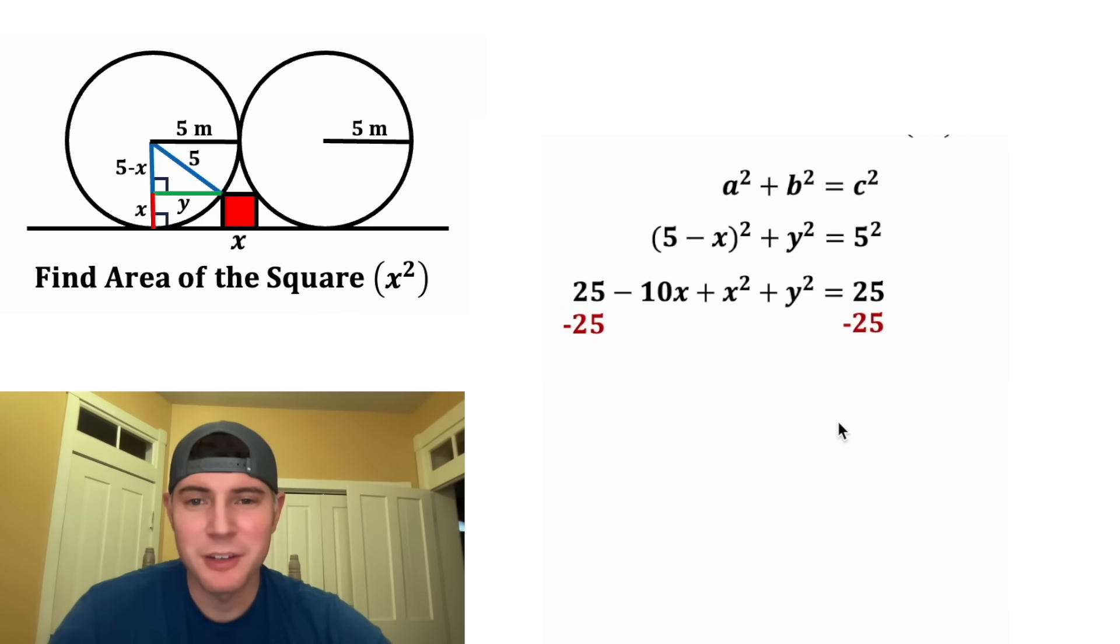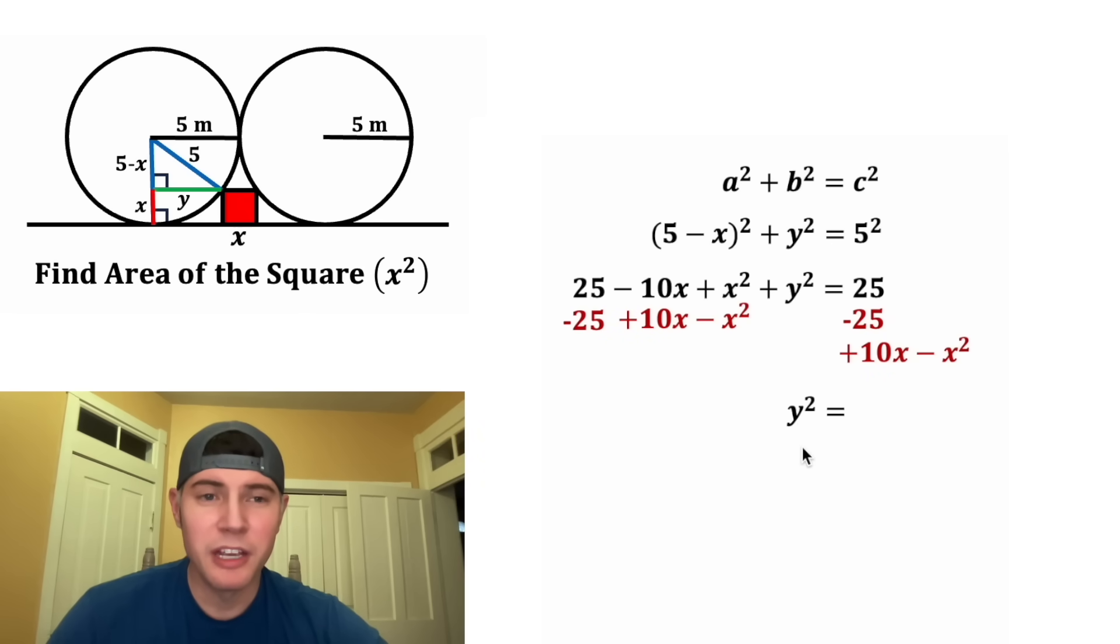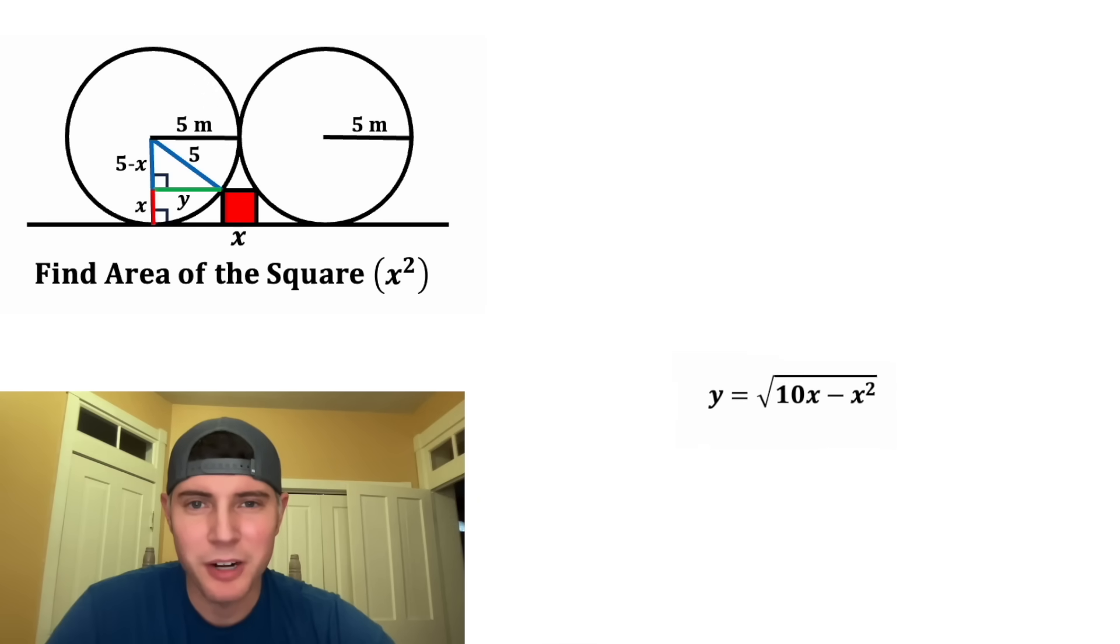And then we can subtract 25 from both sides, and we can also subtract the rest of this stuff from both sides. On the left-hand side, we only have Y squared. And on the right-hand side, we have 10X minus X squared. After we square root both sides, we have Y is equal to the square root of 10X minus X squared.